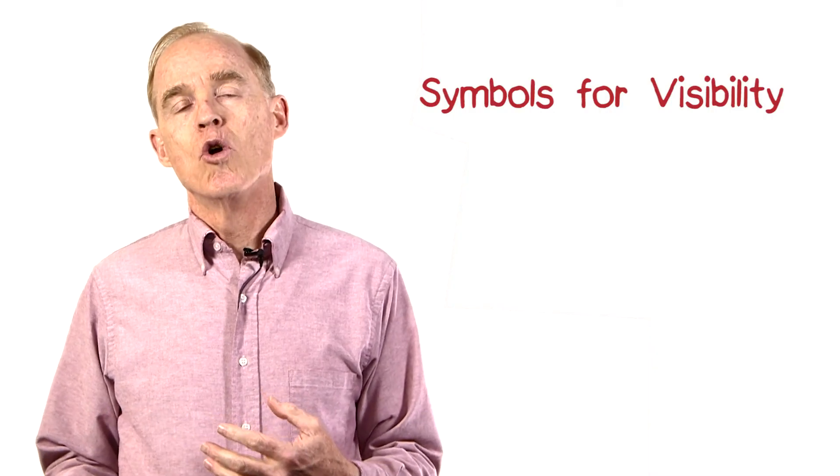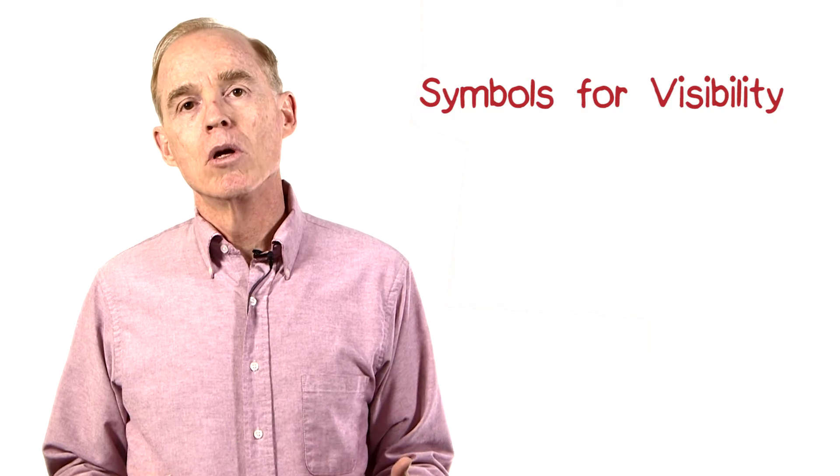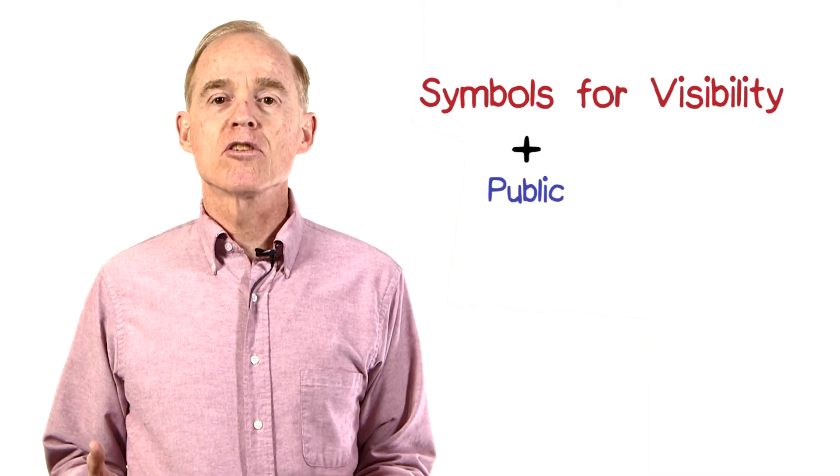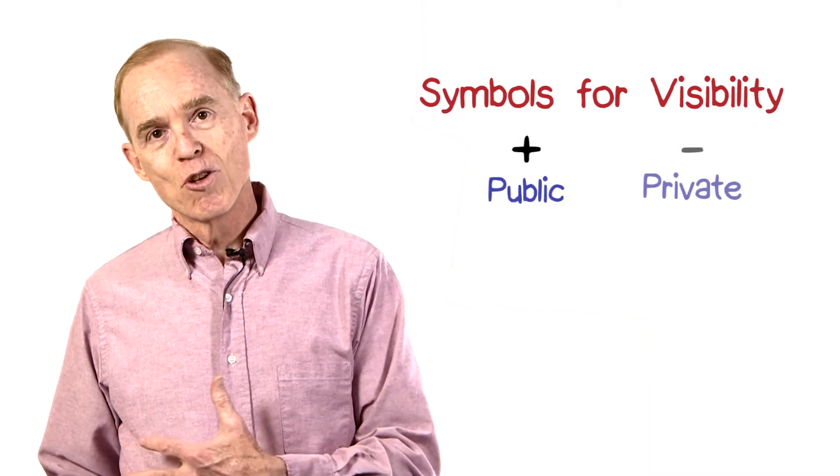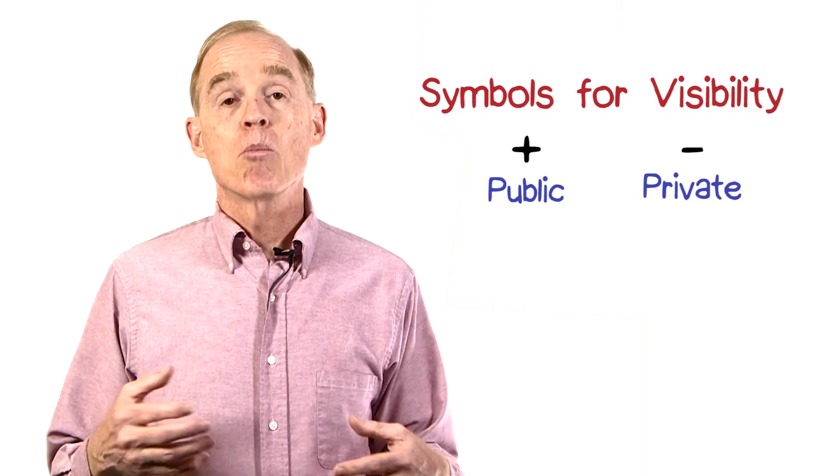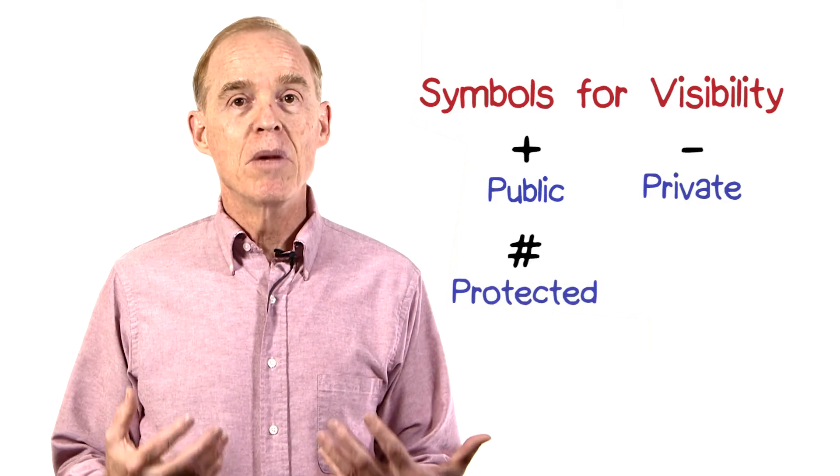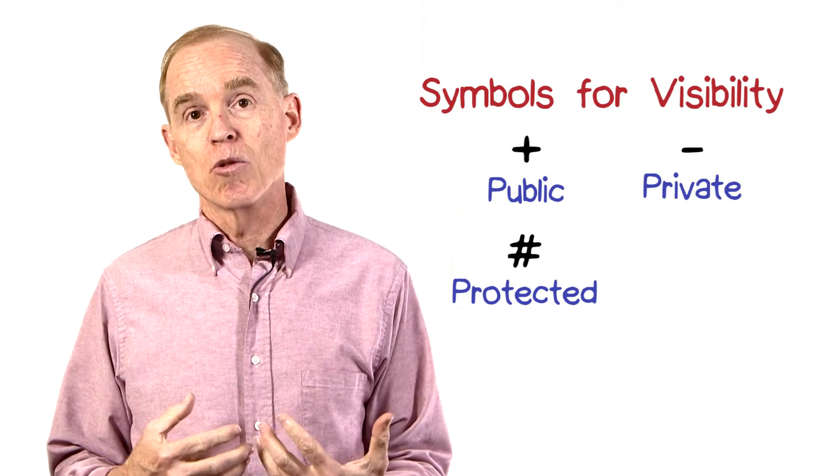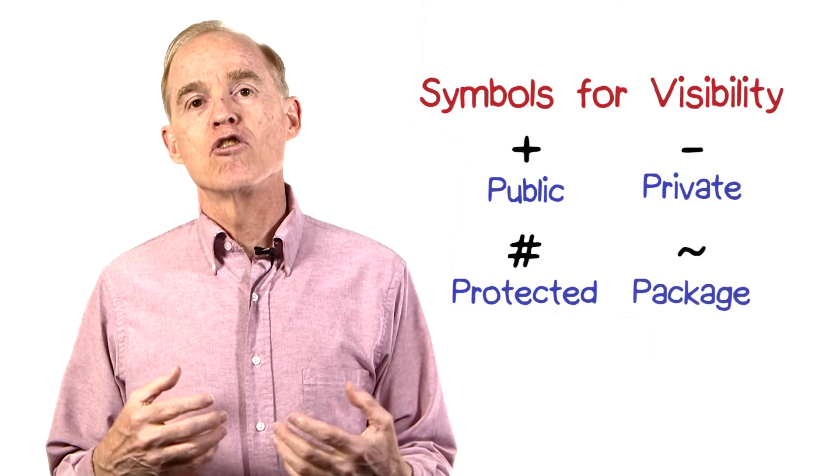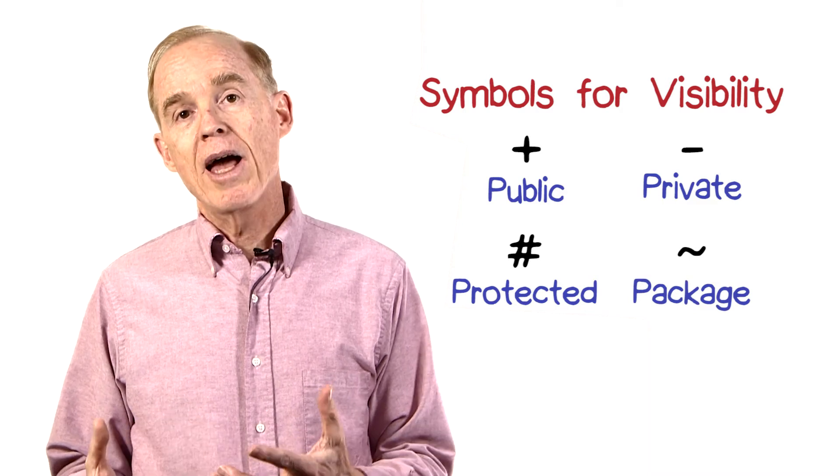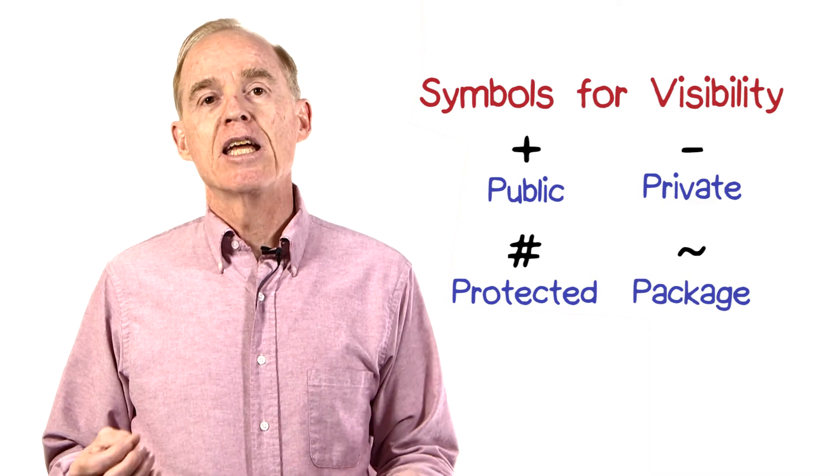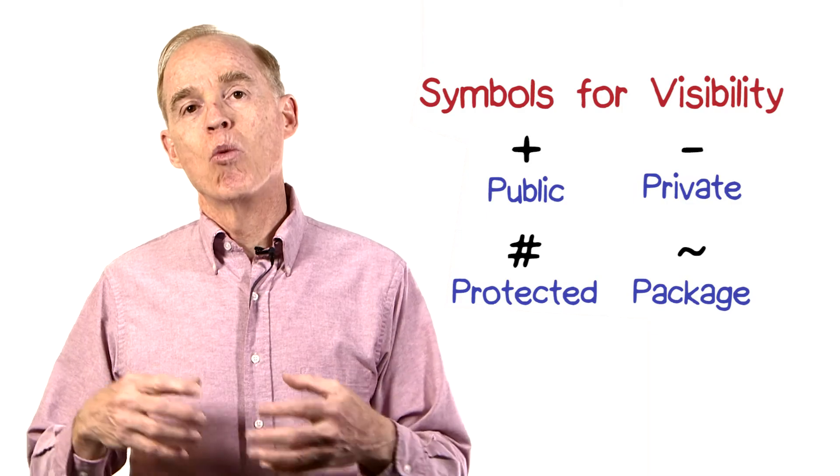The four options in UML for visibility include publicly visible, that's a plus sign, private, which is a minus sign, protected, meaning that only subclasses can access that attribute, is the pound sign. And for those situations where you've used UML packages, the tilde indicates that the name is visible within the package.